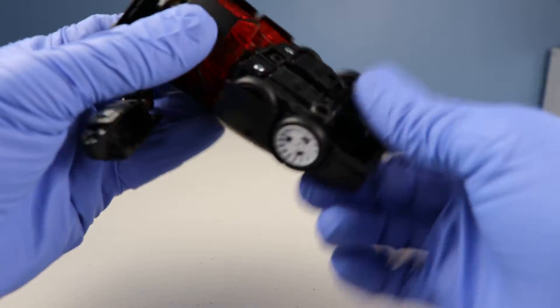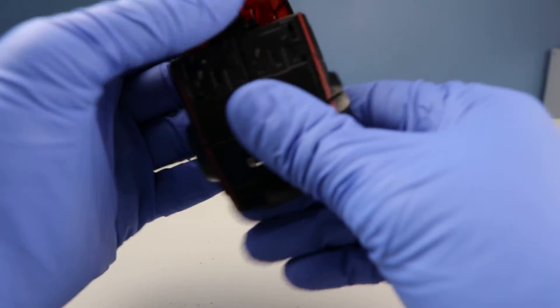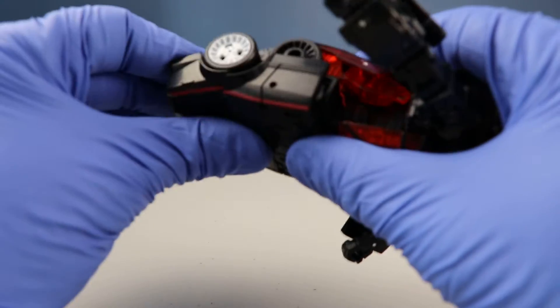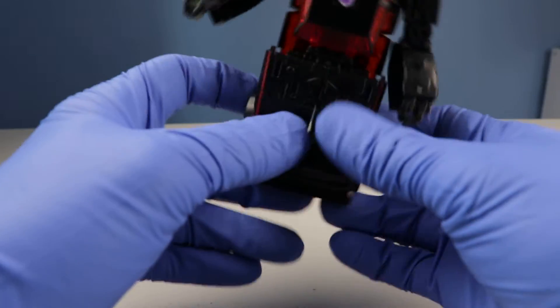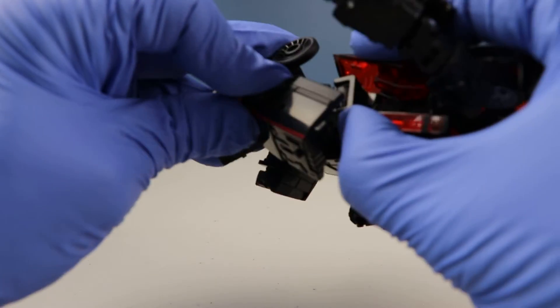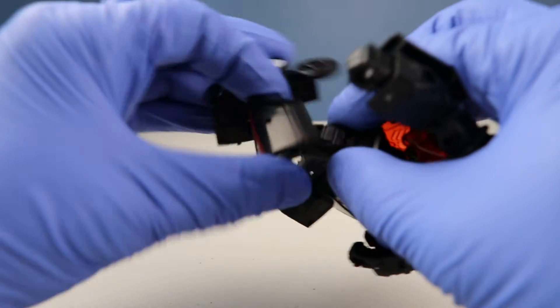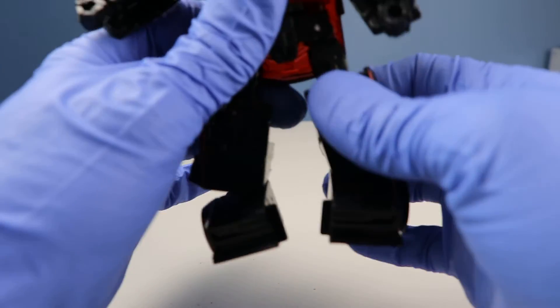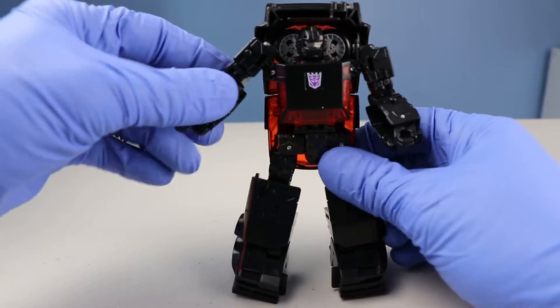And then the waist turns around. Then the feet forward. Separate the legs. And then release this double jointed thigh joint here. And snaps back in. And there you go.